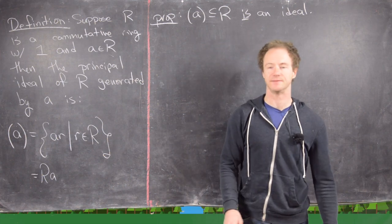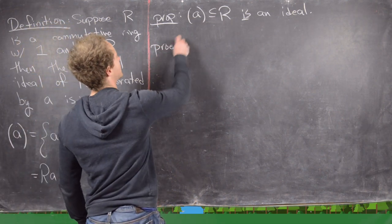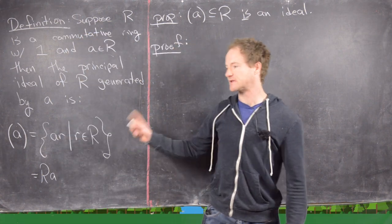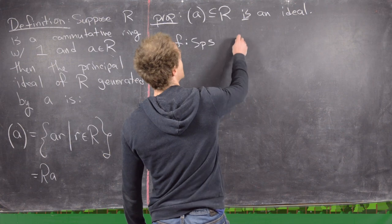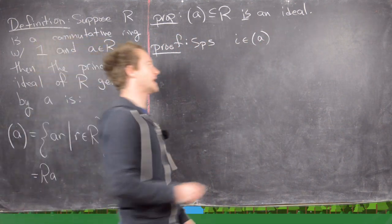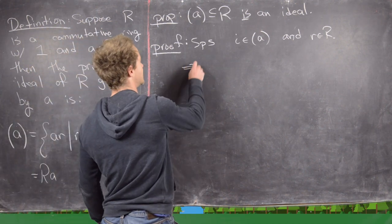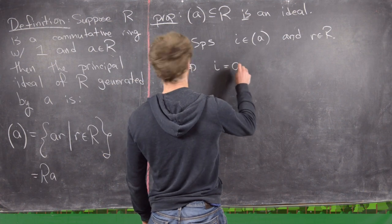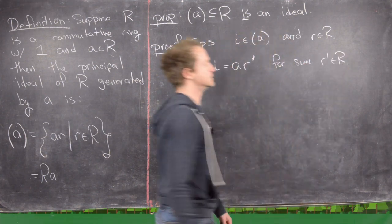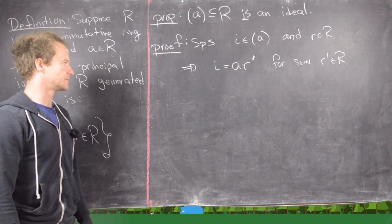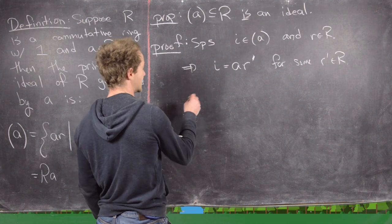Sometimes this is written as R times A. The first thing we want to do is prove that this is actually an ideal. The proof is pretty simple because this notion of a principal ideal is defined in such a way that it's kind of obviously an ideal. Suppose I is an element from the ideal — in other words, I is in (A) — and R is an element from R. That means I equals A times R' for some R' in R, using another letter since R is already taken. This comes from the definition of the ideal generated by A.